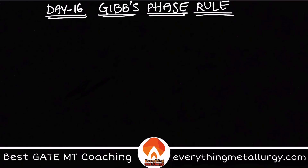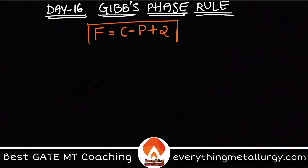Hello guys, welcome to Everything Metallurgy and welcome to Day 16 of 100 Days 100 Concepts. Today we are going to discuss Gibbs Phase Rule. The most common form of this rule is written as F is equal to C minus P plus 2.